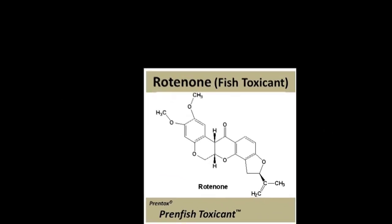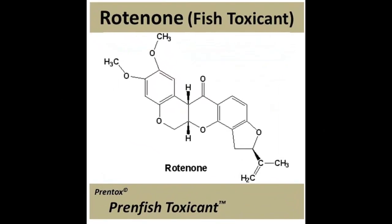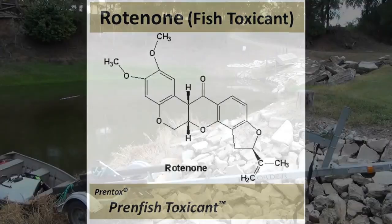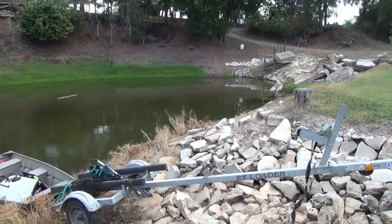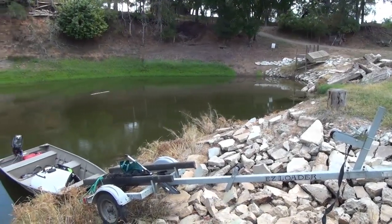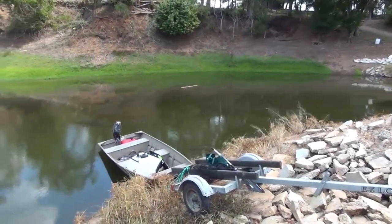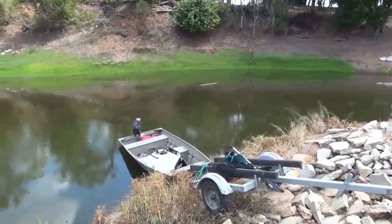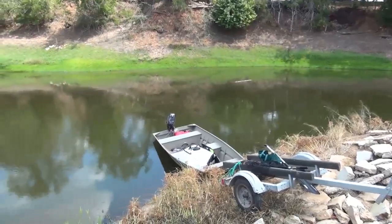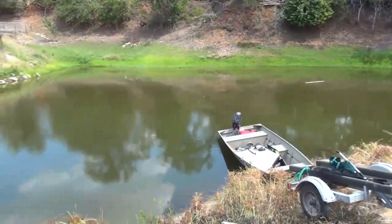The chemical rotenone is an agent derived from the roots and stems of tropical plants that has been used to intentionally kill fish populations in ponds for thousands of years. The primary reason to kill a pond is to remove any undesirable fish species. Undesirable fish can consist of fish that prey on the cultured species, or they can overpopulate the pond and end up competing with the cultured species for food and spawning habitat.